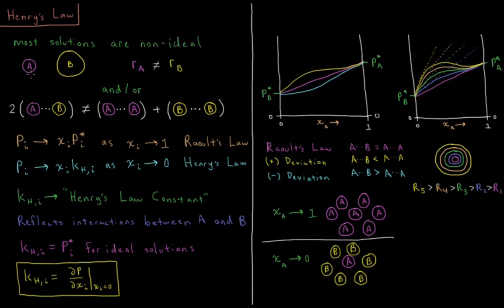For most solutions, you either have that particle A is not equal in size to particle B — maybe they're not equal in size, maybe they're not similar in shape — or the interactions between particle A and particle B are not equivalent to the interactions of A and B with themselves. So the energy of A interacting with B pairs is not equal to the sum of A interacting with A and B interacting with B.